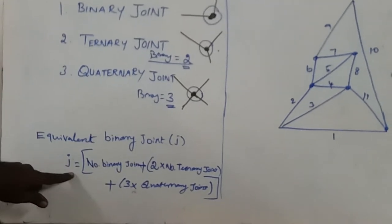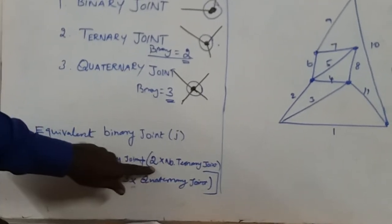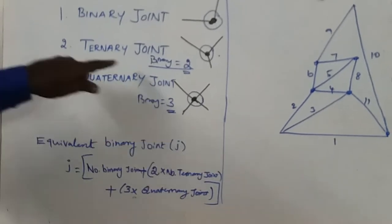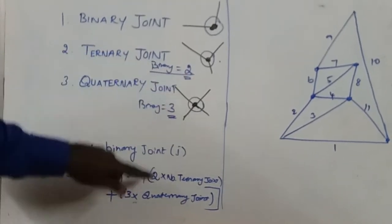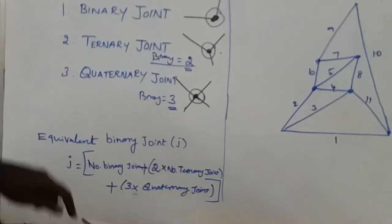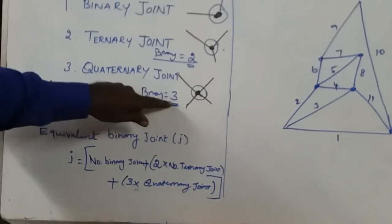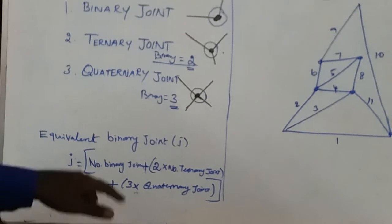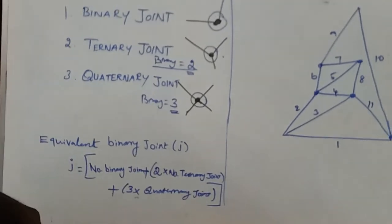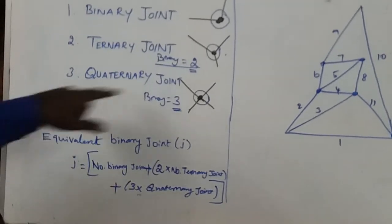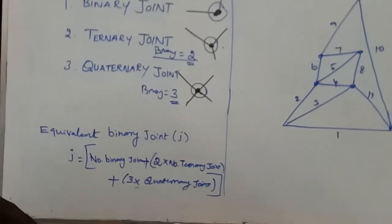The formula for total equivalent binary joints J is equal to: number of binary joints, plus two times the number of ternary joints (since one ternary joint equals two binary joints), plus three times the number of quaternary joints (since one quaternary joint equals three binary joints). This gives the total equivalent binary joint count.